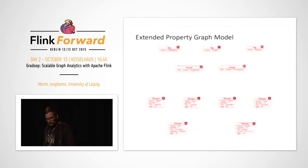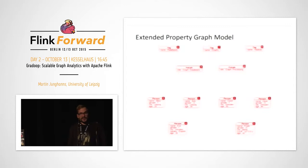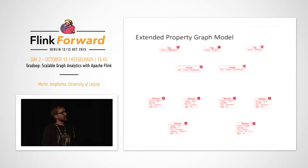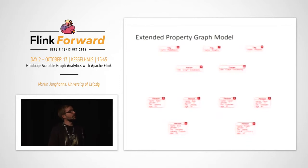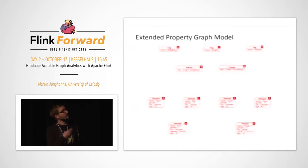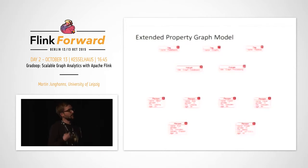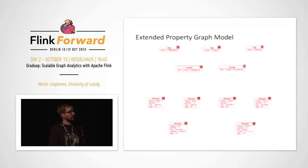Let's talk about the data model using an example. Our graph contains vertices — they all have a unique identifier, a unique label, and a set of properties. For example, we have tags, forums, and persons, with properties as key-value pairs like name=Eve or title=graph processing. There's no schema enforced, so a vertex with label person doesn't have to have a fixed set of properties — Frank at the bottom has additional properties compared to the other persons.